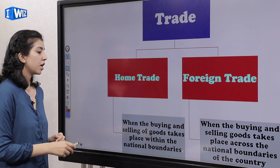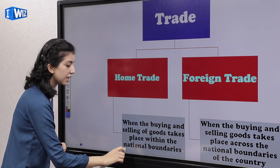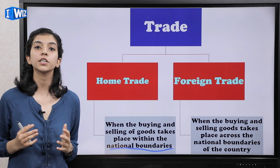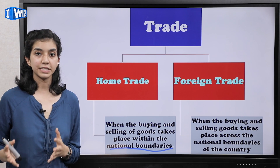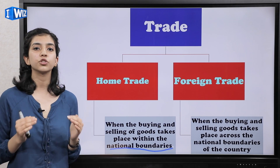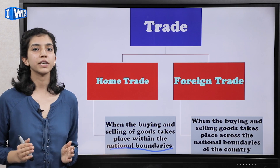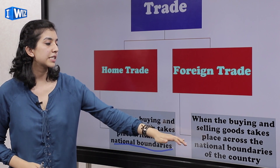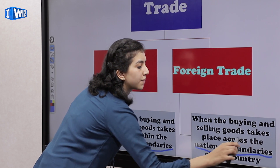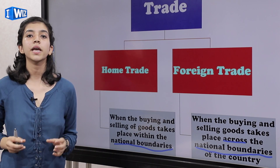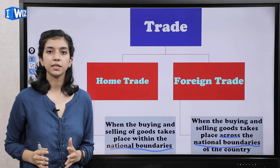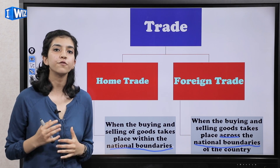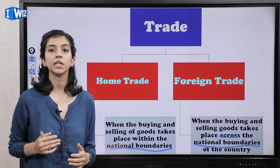What is home trade? When the buying and selling of goods takes place within the national boundaries. National boundaries ka matlab hai humare particular country ke within — like trade taking place between different states, different towns, or different districts. In short, jo bhi trade ka procedure hai wo humare country ke andar hi rahega. On the other hand, foreign trade is when the buying and selling of goods takes place across the national boundaries — jab trade takes place within different countries. It does not only include our own country but different countries also. For example, trade relations between India and Pakistan.